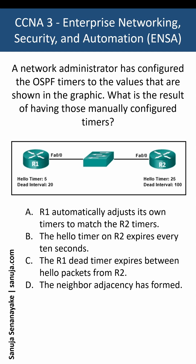The correct answer is that the R1 dead timer expires between hello packets from R2. The dead timer of 20 seconds on R1 expires before the next hello packet from R2, which has a 25-second hello interval.